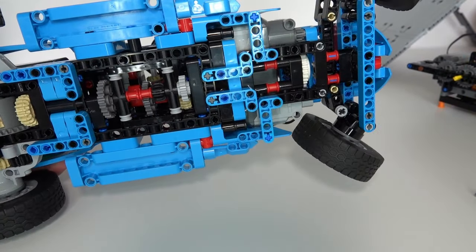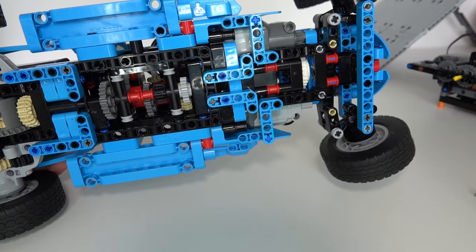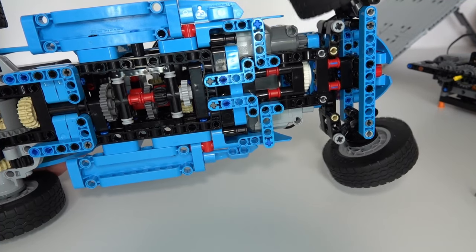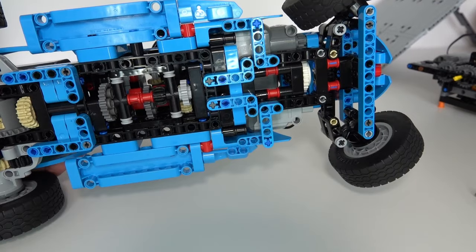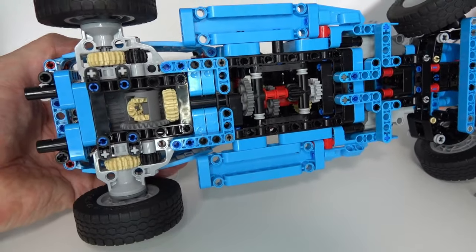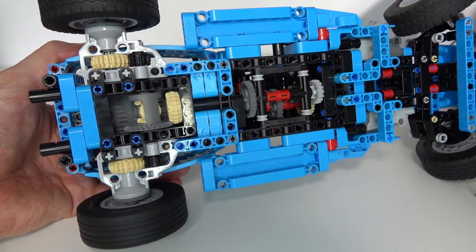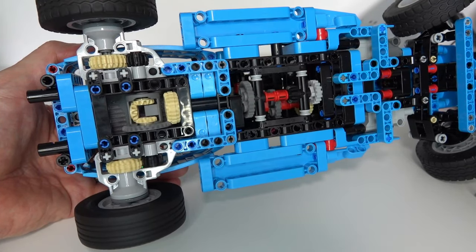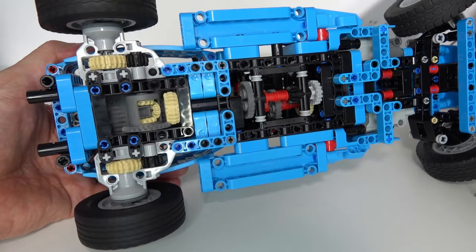The steering is just simply done with a large power functions motor. You can see that white clutch gear slipping once we've reached the limit of this steering mechanism. And then the main motor just drives like that through a differential at the back which is pretty standard for these types of cars.